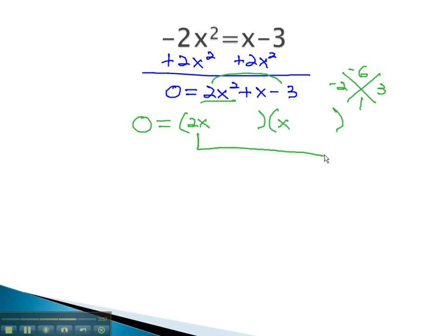At the end, 2x times something, to get the negative 2, must be negative 1. In the middle, x must be multiplied by 3 to give us the other number.